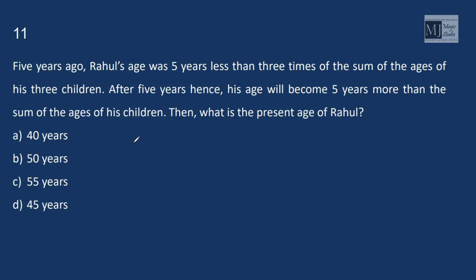5 years ago, Rahul's age was 5 years less than 3 times the sum of the ages of his 3 children. After 5 years hence, that means from this particular point, we need to add 10 years. So Rahul's age will become 5 years more than sum of the ages of the 3 children. So sum of the ages of 3 children would be s plus 30 and his age would be 5.